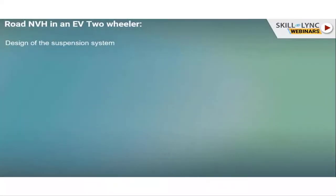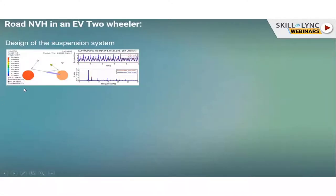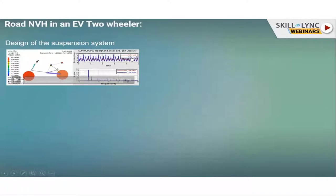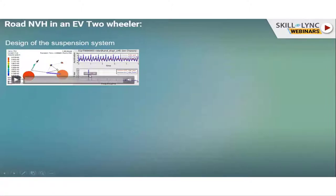Now let's look at a use case of how to design a suspension system. This is a basic simulation I carried out — a series of bumps that the vehicle is going through, like a correlated road. The right side shows acceleration levels on the rider seat and rider hand, along with FFTs. There are definite peaks in the frequency chart. I did an FFT of the time domain and converted to the frequency domain. I can see something happening at around 5 Hz, which can be the bounce mode.